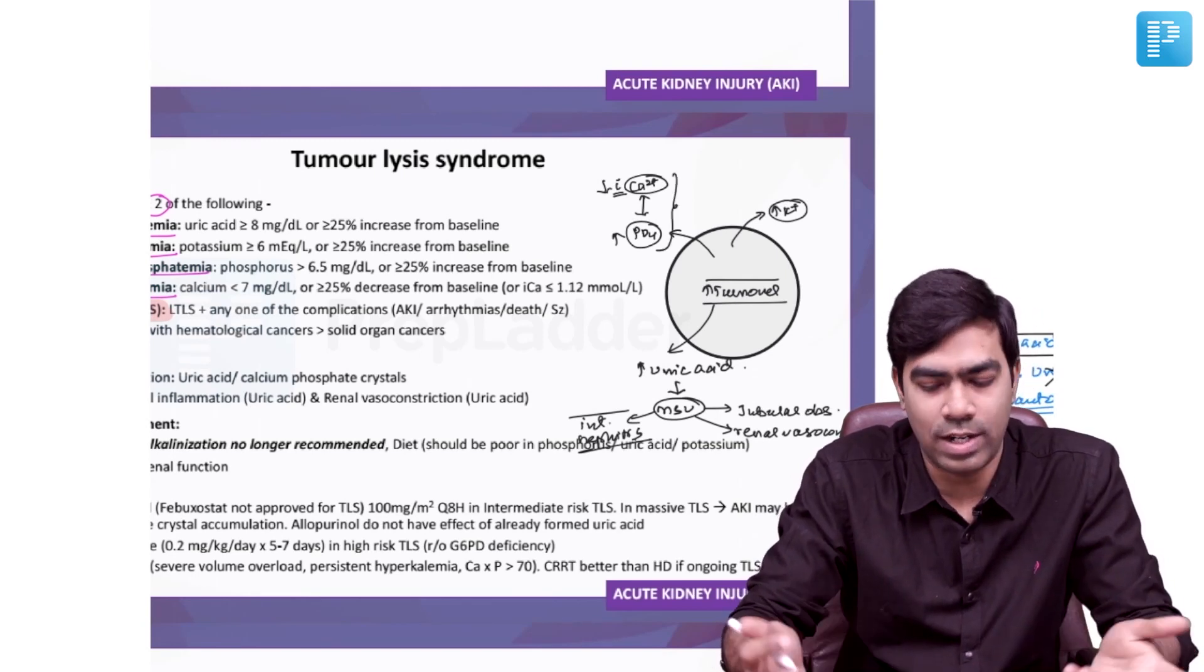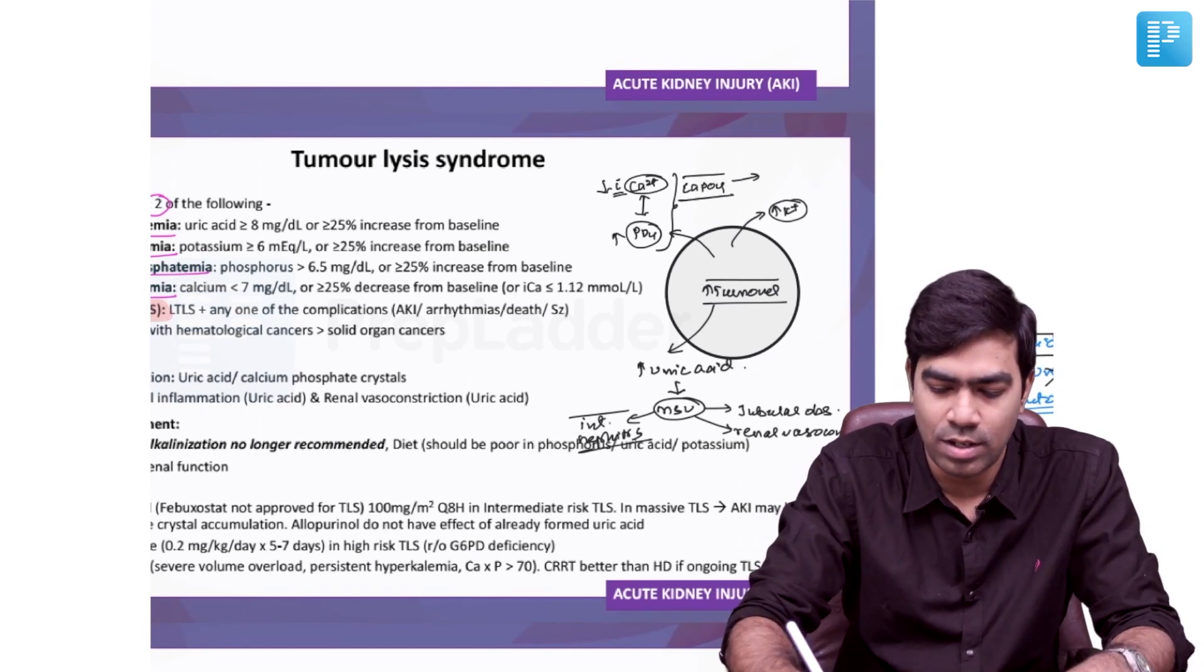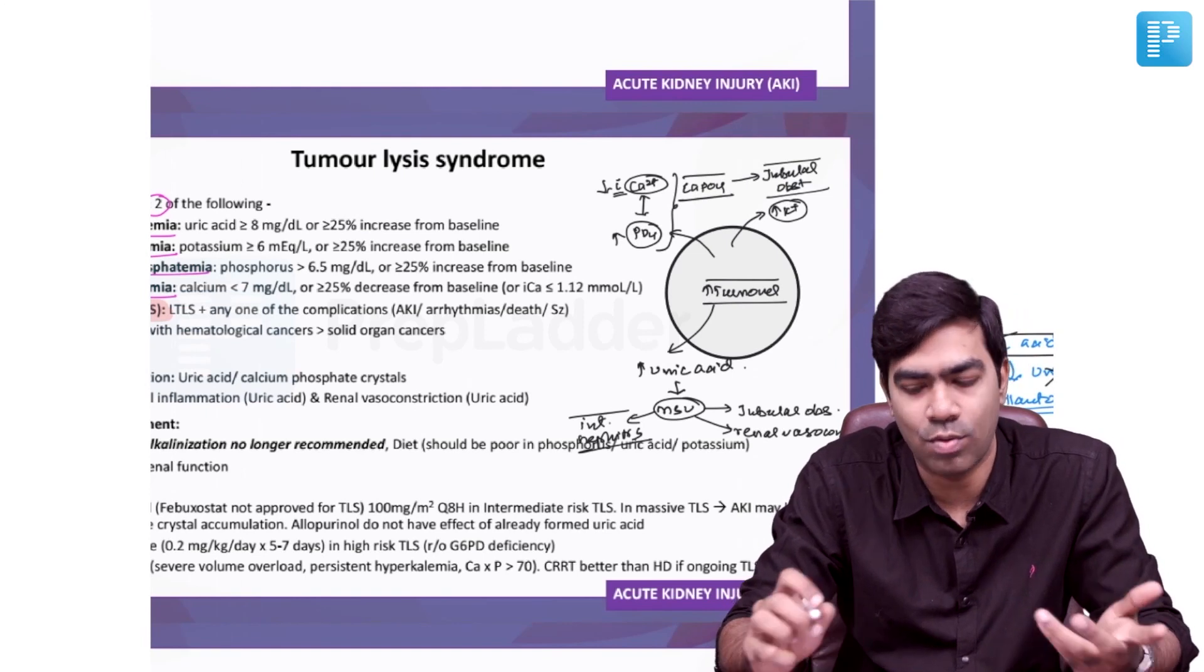Once phosphate traps the calcium, they can result in the formation of calcium phosphate crystals, which can cause tubular obstruction and produce acute kidney injury on their own.